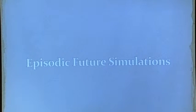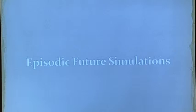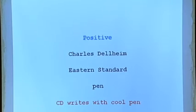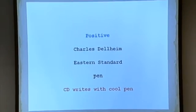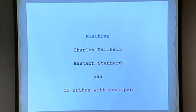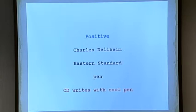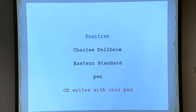So how did I do this? We started with episodic future simulations, and I'll show you an example. We had people come in and used a paradigm created by Carl Spooner and Dan Schachter at Harvard. We had participants come in and list 110 people, places, and objects they were familiar with. These are examples of people, places, and objects.